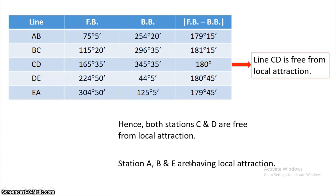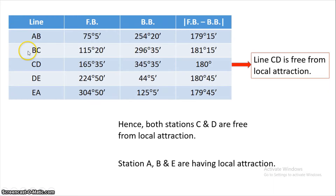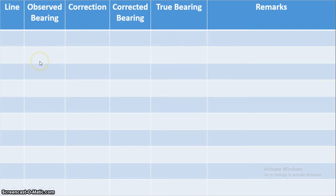To solve this problem, we need to fill a tabular column. The columns are: Line, Observed Bearing, Correction, Corrected Bearing, True Bearing, and Remarks. Compared to the previous local attraction problem, the only difference here is the addition of a True Bearing column. The observed bearing column combines forebearing and backbearing data together rather than separately.